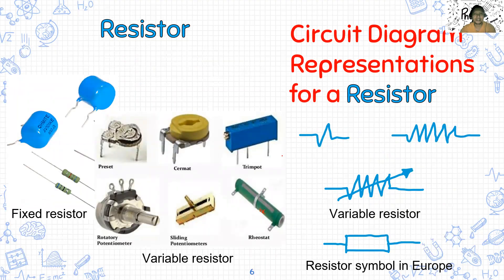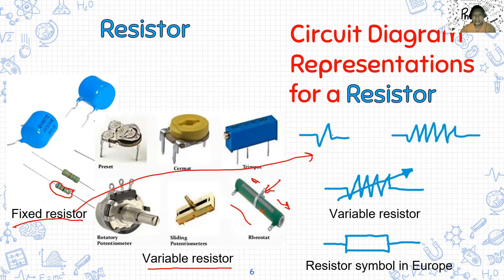The circuit diagram representing resistors: we have what are called fixed resistors — their value stays the same, it doesn't change. It's different from a variable resistor, for example the rheostat. As you move this to the left or to the right, depending on your connection, the resistance can decrease or increase. For a fixed resistor, it can be represented as a single rectangle or as a zigzag. It's up to you. But for a variable resistor, there is an arrow. In Europe, the symbol they use is a box.